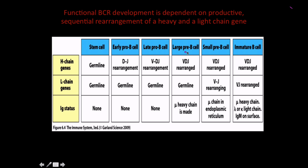By the time we're at the large pre-B cell, we're pretty much done with all the heavy work—pun intended—of having a functional VDJ recombination taking place. We're going to be expressing a mu chain, but now we turn our attention to the light chains.